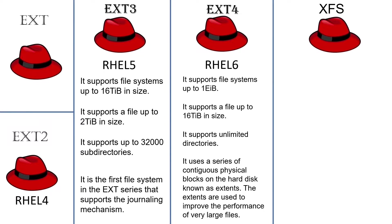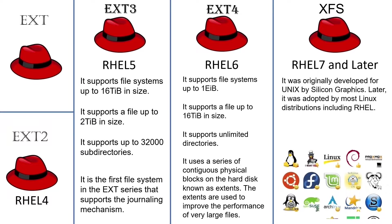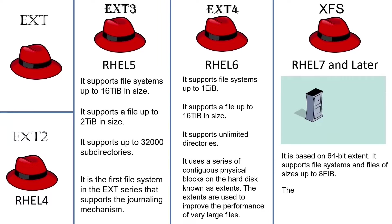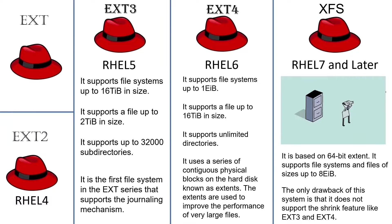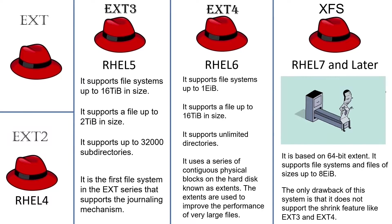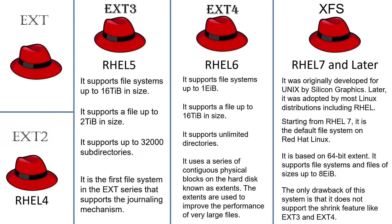The XFS file system was mainly developed for Unix by Silicon Graphics, and was later adopted by most Linux distributions including RHEL. It was the default file system in RHEL 7. XFS is based on 64-bit extents and uses journaling for metadata operations. It supports file systems and files of sizes up to 8 exabytes. The only drawback is that it does not support the shrink feature like ext3 and ext4.